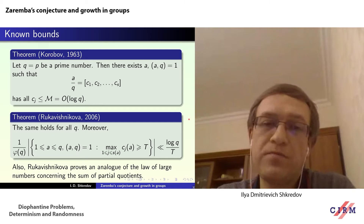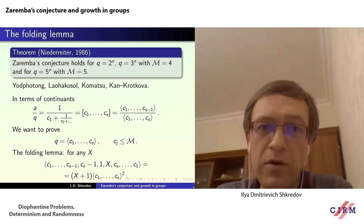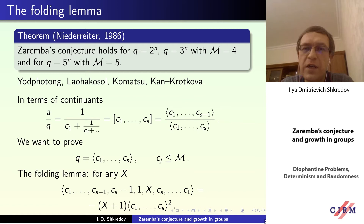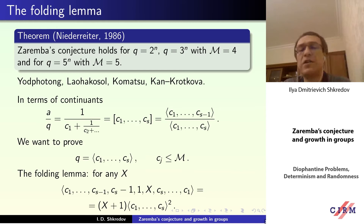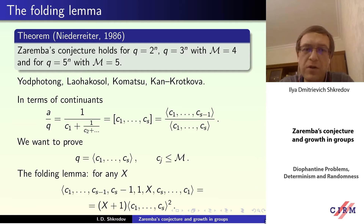This is the best result at the moment — even taking m slightly smaller than log(p) is still open. For specific q, the conjecture is known to be true. A famous result of Niederreiter showed that for specific q — say q equals 2^n or 3^n — one can take m equal to 4, and for q = 5^n, m equals 5. There are other results in this direction by other mathematicians taking other sequences of q, even growing faster than exponentially. All these results are based on the so-called folding lemma.